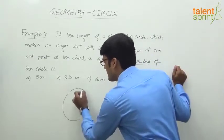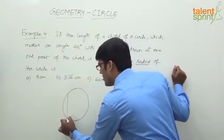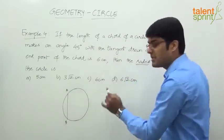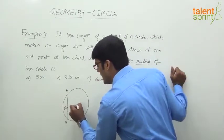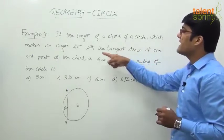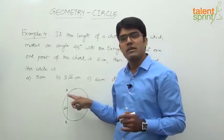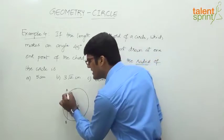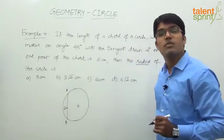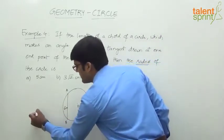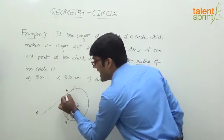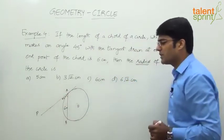Here is the circle, and AB is the chord — let's say A and B. The length of the chord is 6 centimeters. Let's say O is the center of the circle. Now, this chord makes an angle of 45 degrees with a tangent drawn at one end point. Let's say the end point is A. We draw a tangent at point A — this angle between the chord and the tangent is 45 degrees.